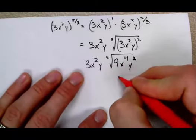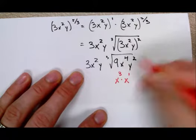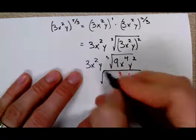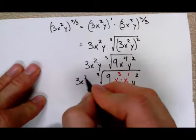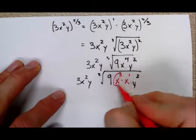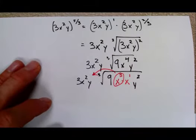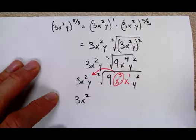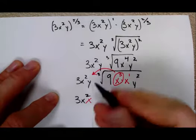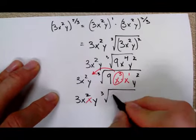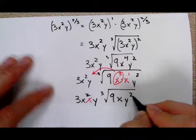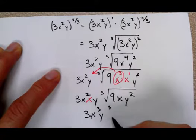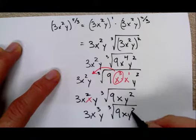You can see with that x, that x to the 4th, you could think of that as x to the 3rd times x to the 1st inside with your 9 and your y squared. It's still the cubed root of all that, and you still have 3x squared y out front. And this x cubed can get pulled out, just like all the other examples that we saw where we can pull out. And so then you have, out front, you have 3x squared, another x, and then y cubed root of 9xy squared, and then to finish, put all that together, 3x cubed y, and then the 3rd root of 9xy squared for your final answer.